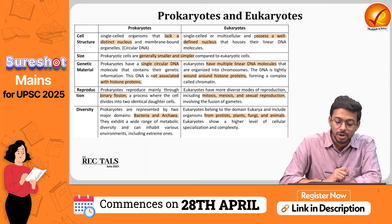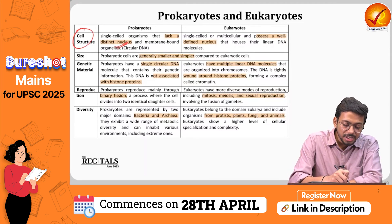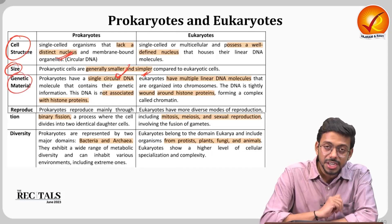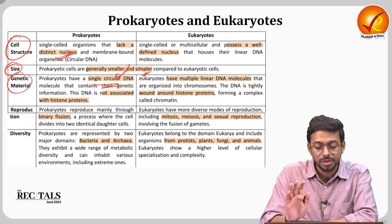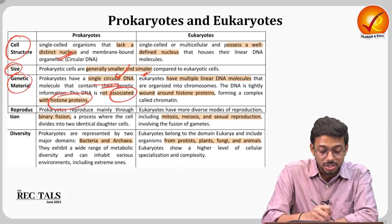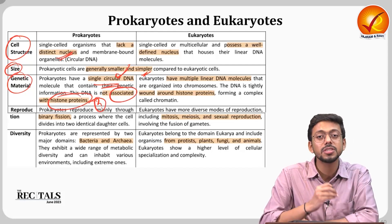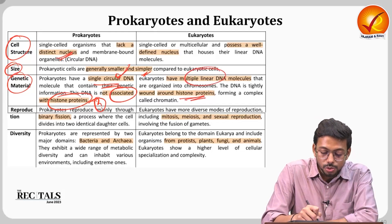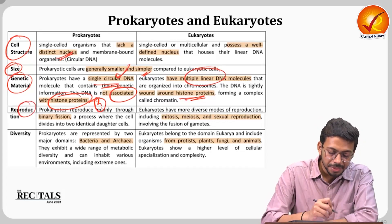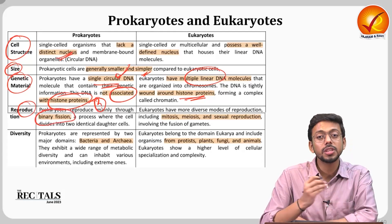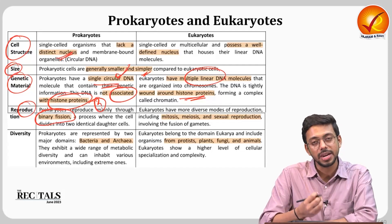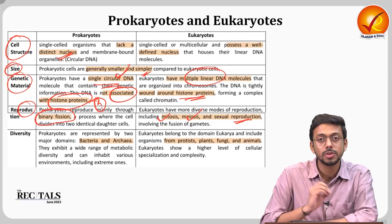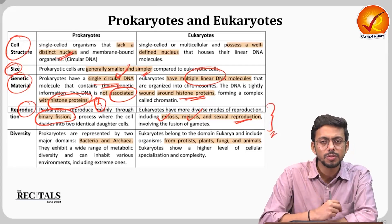Prokaryotes lack a distinct nucleus. In terms of size, prokaryotes are smaller and simpler. Their genetic material is a single DNA strand not associated with histone proteins. Eukaryotes have multiple DNA strands associated with histone proteins. In terms of reproduction, prokaryotes mainly reproduce by binary fission, while eukaryotes go through mitosis, meiosis, or sexual reproduction.